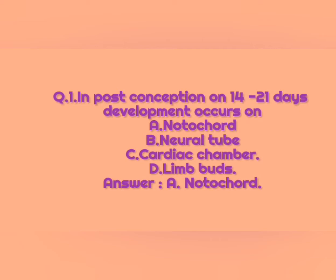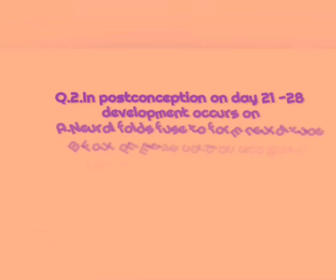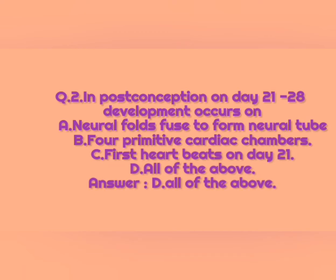Question number one: In post-conception, on 14 to 21 days, development occurs on — option A: not occurred, option B: neural tube, option C: cardiac chambers, option D: limb parts. The correct answer is option A: not occurred. Not occurred means cartilage and skeletal — the structures supporting the body — have not yet developed in the embryo at this stage.